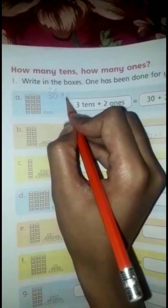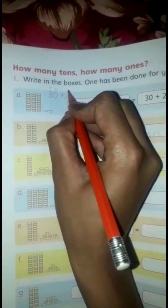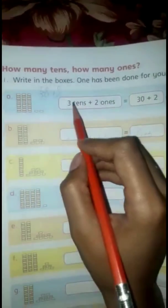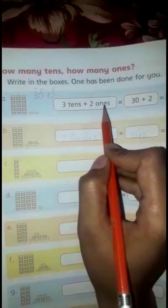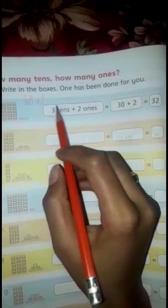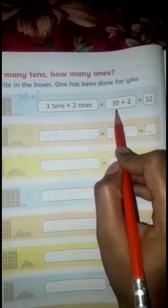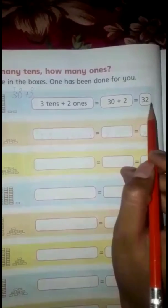Now you will write this in a simple way, like I have written here. Three tens means thirty, two ones means two. If you add them, then you will have 32.